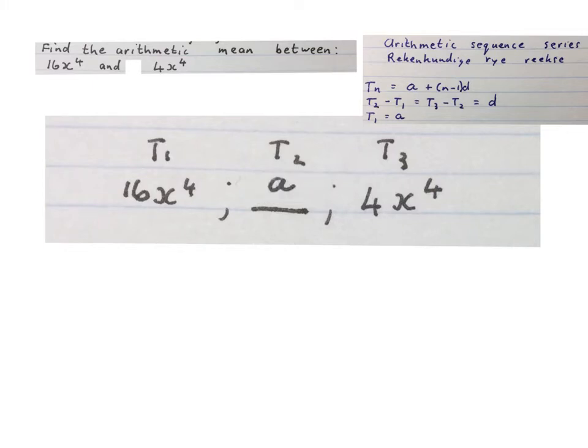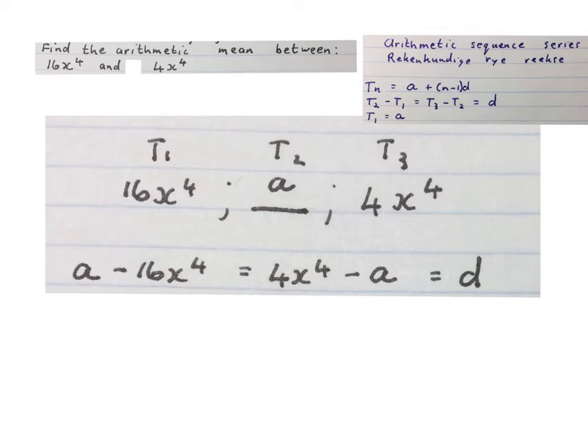So now we use a different variable for term 2. Because it's arithmetic, we know that we can find our difference which is constant, so we take this A minus this, write it down, equals this minus this over here. That is my D.